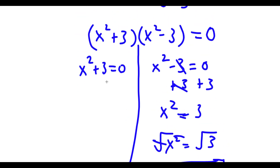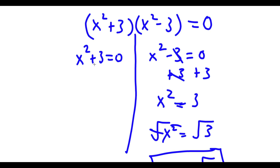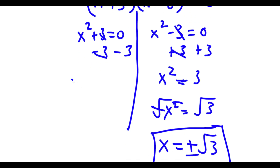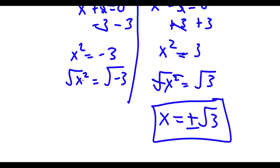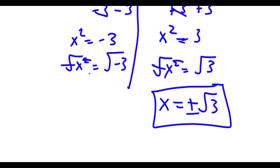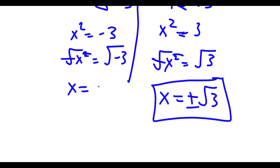Now I'm going to get two more solutions from the other equation. I have x squared plus 3 equals 0. I'm going to start by subtracting 3 on both sides, so I get x squared is equal to negative 3. Now I'm going to take the square root on both sides, so I'm left with x is equal to plus or minus the square root of negative 3.